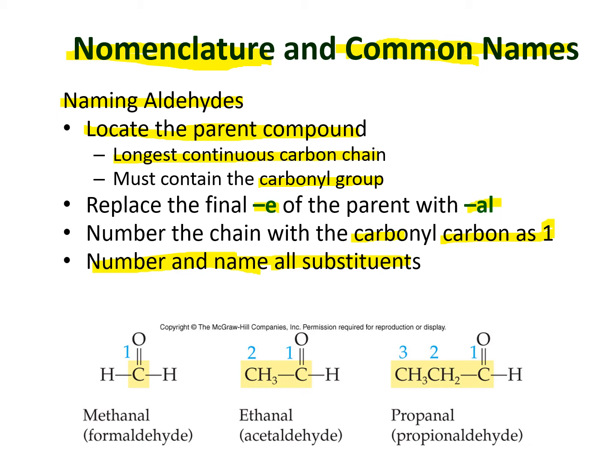Any branches or substituents are named and numbered just as with alkanes and alkenes. The three simplest examples: methane becomes methanol, ethane becomes ethanol, and propane becomes propanal. Common names for these are formaldehyde, acetaldehyde, and propanaldehyde respectively.